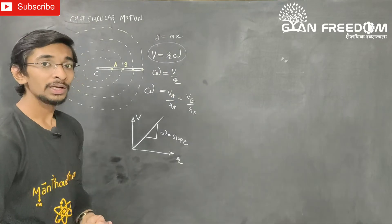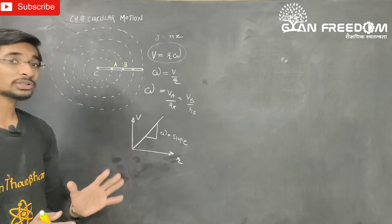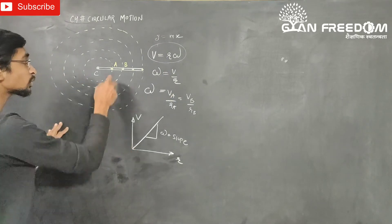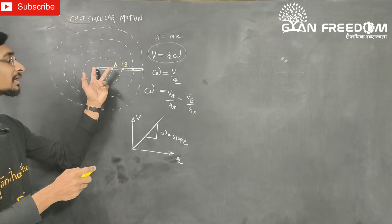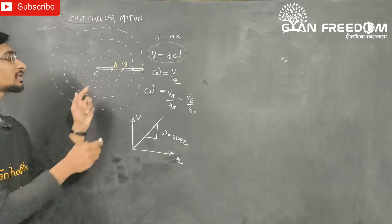So the angular velocity is the same for both A and B, with radii Ra and Rb.